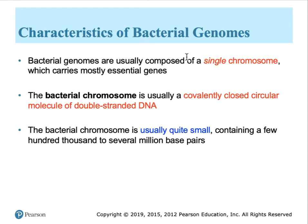In most cases, bacterial genomes consist of a single chromosome that carries the most essential genes for allowing that bacterial strain to grow. The bacterial chromosome is usually a circular closed molecule — a covalently closed circle (CCC) — and it's double-stranded DNA, unlike our chromosomes, which are linear chromosomes with two ends.